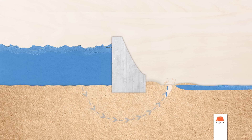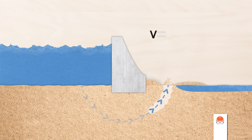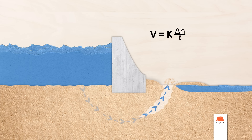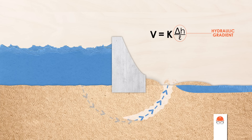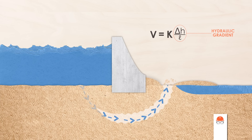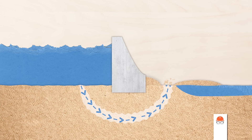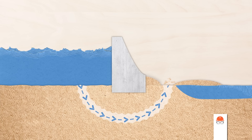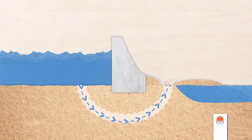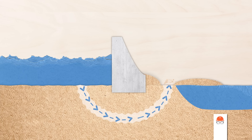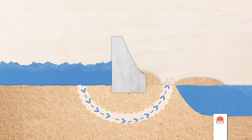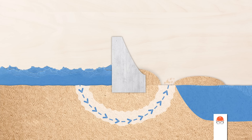As soil is carried away from the dam's foundation, the seepage path gets shorter. Remember that seepage depends on the hydraulic gradient, which is a function of the length of the seepage path and the difference in pressure. If the pressures stay the same but the path gets shorter, the gradient goes up, creating more seepage. This is a dangerous positive feedback loop: the erosion shortens the seepage path, while the increasing seepage creates more erosion.